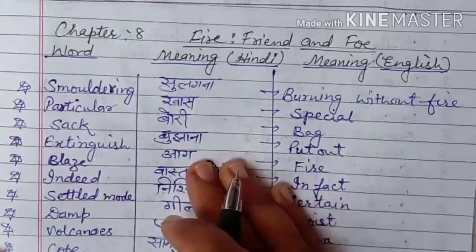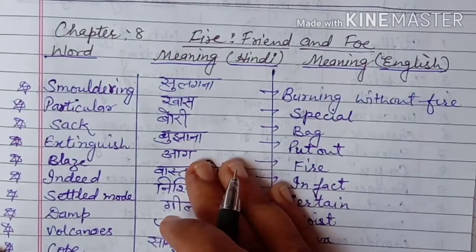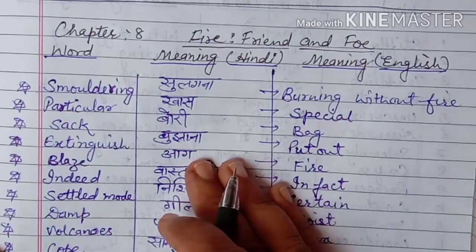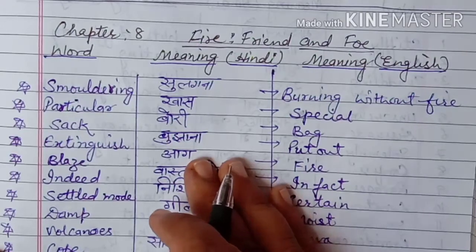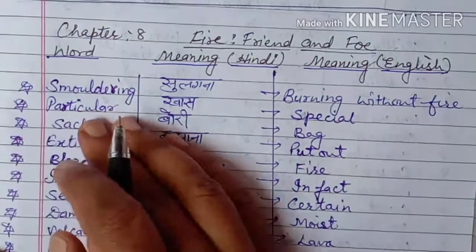Hello everyone, welcome back to our channel. Today we are going to start with a new chapter. The name of the chapter is Fire, Friend and Foe. It is Chapter 8, and we will do its word meanings and question answers. So let's get started.